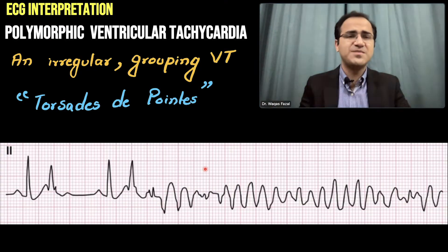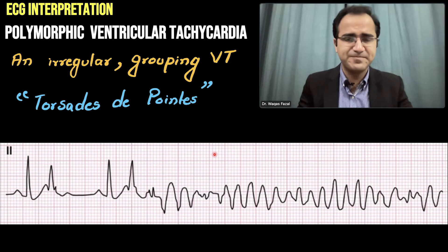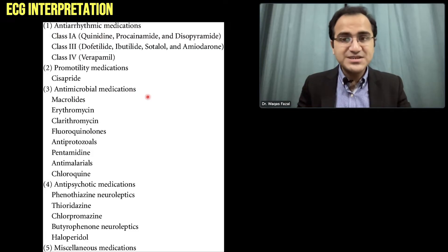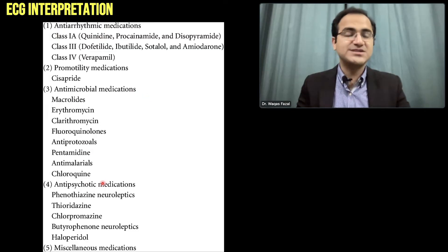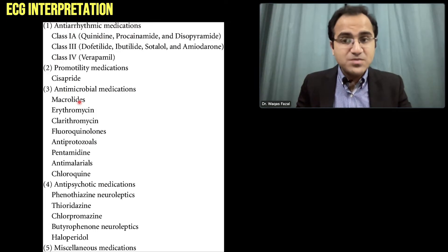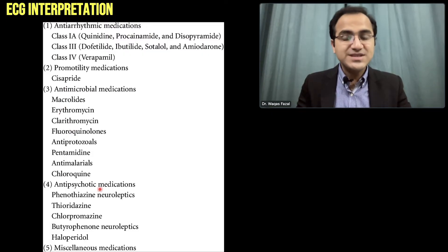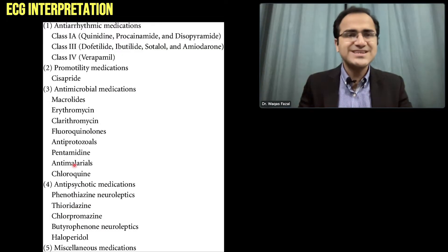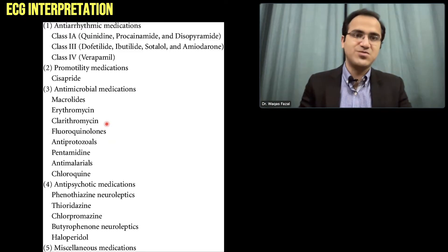The causes of torsades de pointes include antiarrhythmic drugs, antimicrobial drugs, and antipsychotic drugs. Antiarrhythmic drugs include quinidine, procainamide, and disopyramide. Antimicrobial drugs include macrolides such as erythromycin and clarithromycin. Antipsychotics include phenothiazines, neuroleptics, thioridazine, chlorpromazine, and haloperidol. These are the drugs that can cause torsades de pointes.